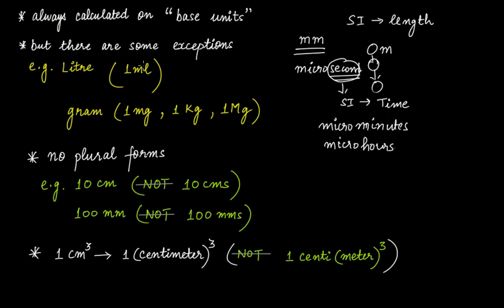Quite often we measure volume, especially of liquid, in liter. We know that the SI unit of volume is meter cubed, but we commonly say it is 2 liters or 3 liters. So quite often we use liter when talking about the volume of a liquid. We can calculate 1 milliliter, 1 kiloliter, and so on. This is one exception.